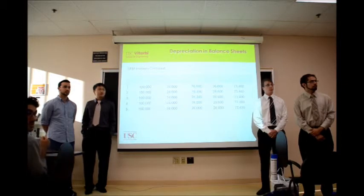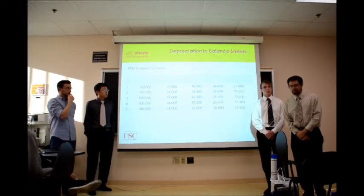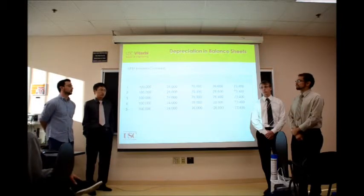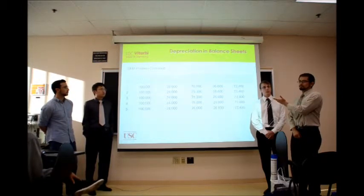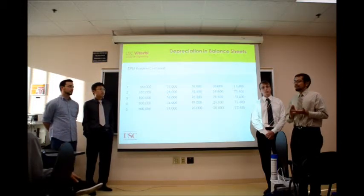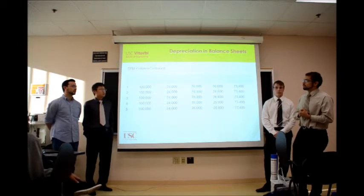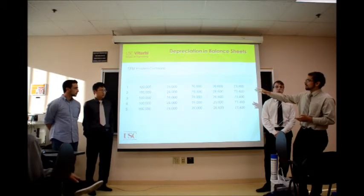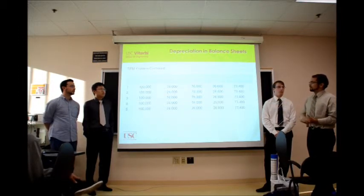Now that we've covered how to calculate depreciation, we can see how it applies to a balance sheet. Suppose USC makes $100,000 gross off the use of the scanning electron microscope. Going back to our straight line depreciation example, the microscope depreciates by $24,000 per year. Since depreciation is tax deductible, instead of being taxed at 35% on $100,000, we deduct the $24,000 depreciation as an expense and are only taxed on $76,000. That means taxes at 35% are not $35,000 but $26,600, and the net income works out to $73,400.